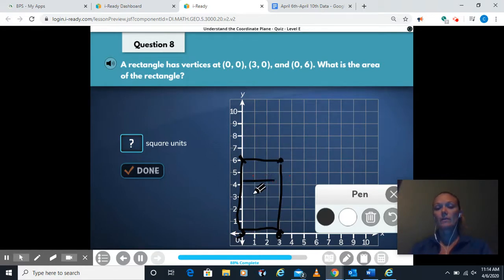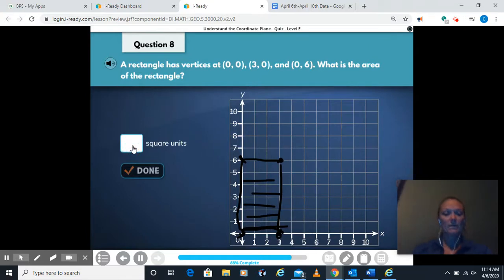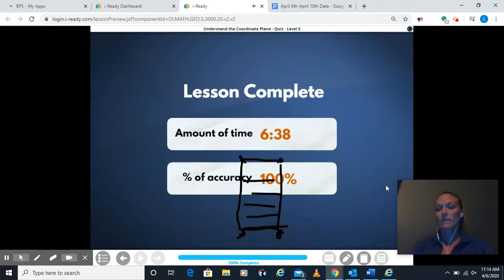3, 6, 9, 12, 15, 18. If I counted up all those squares. Take my pen away here. Type in 18 square units. And we're done. All right, guys. I will see you later.